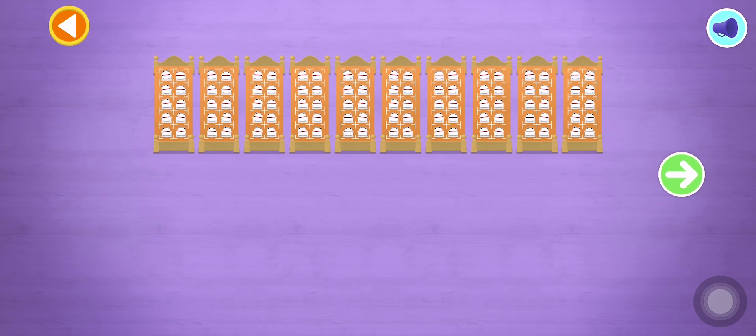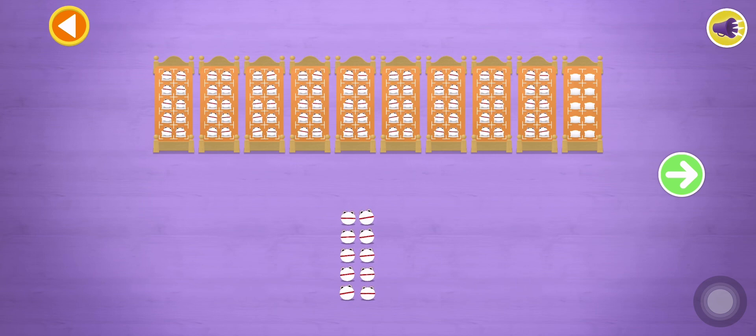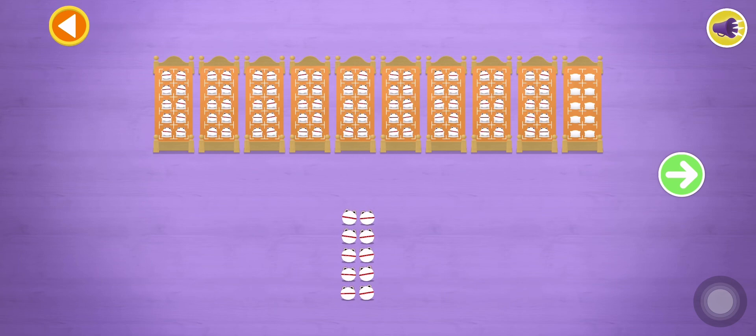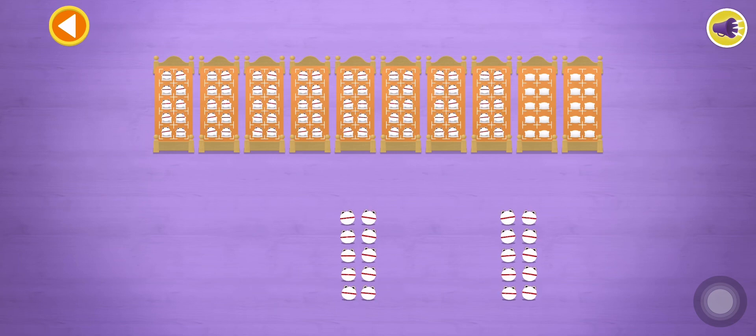Oops. Tap the green arrow when you've counted the right number of number blobs. Oops. Tap on the bed to remove a number blob. Spot on!